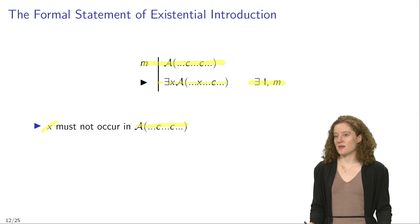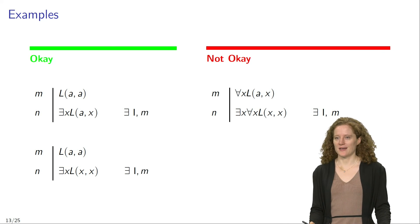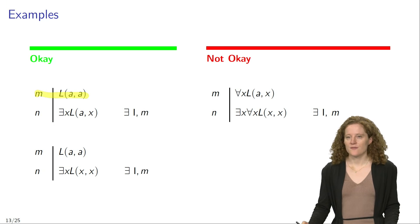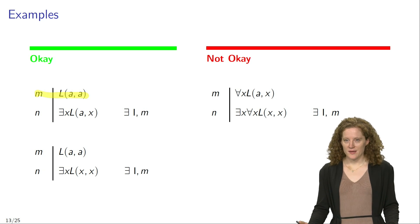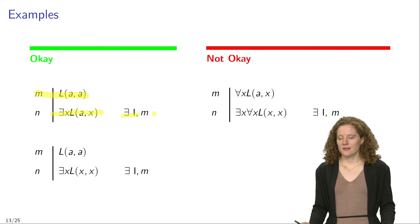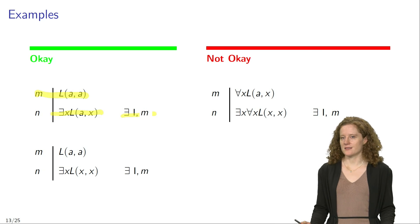So the variable X may not appear in line M when you apply the rule. Let's look at a few examples of correct and incorrect applications of existential introduction. In the top left corner you see a correct application: in line M we have the sentence LAA, and you may then infer that there is an X such that LAX, justified by existential introduction applied to line 1. Here we have replaced the second occurrence of the name A with the variable X, then prefixed the resulting open formula with the existential quantifier.